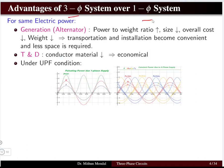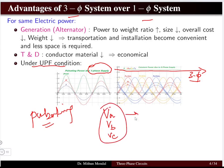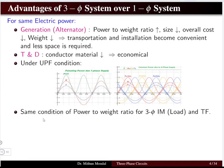Under unity power factor conditions, if we have a single-phase supply, the power is pulsating in nature — we do not get continuous power. However, with a three-phase system, we get constant power at the terminals. This is because each phase has its own voltage va, vb, and vc, out of phase by 120 degrees, giving powers pa, pb, and pc that add up to constant total power.